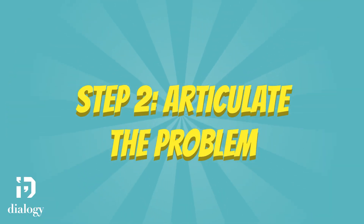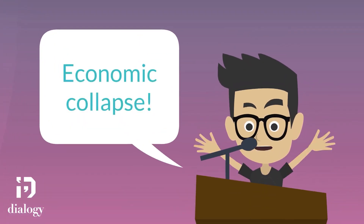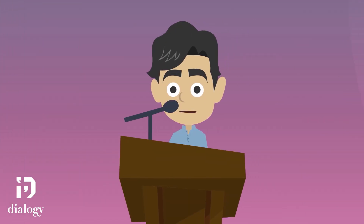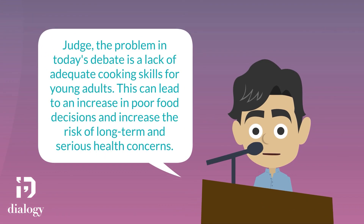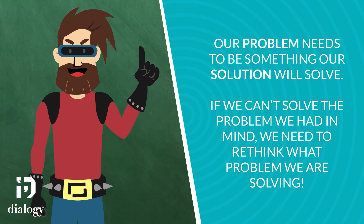Step 2: articulate the problem. Now that we have identified the problem, its importance, and potential solutions, we should discuss our presentation. Screaming phrases like 'economic collapse,' 'serious health issues,' and 'death' while waving our arms in the air is not the best approach. Instead, we should be specific and concise. For example: 'Judge, the problem in today's debate is a lack of adequate cooking skills for young adults. This can lead to an increase in poor food decisions and increase the risk of long-term and serious health concerns.' The important takeaway is that our problem needs to be something our solution will actually solve. If obesity is the problem but a mandatory cooking class does not solve it, we need to re-clarify what problem our solution is solving.